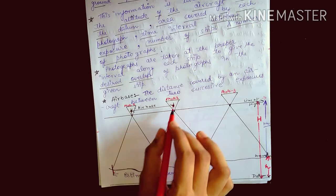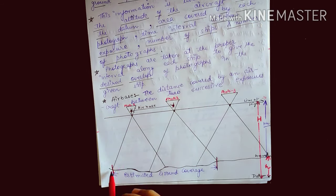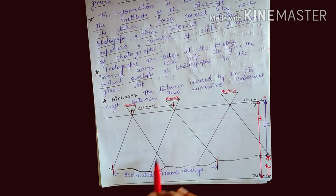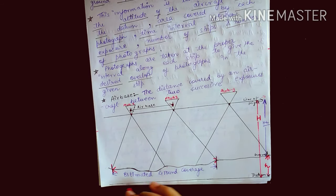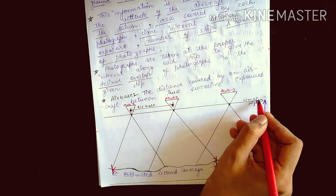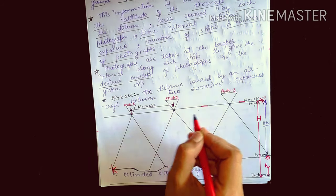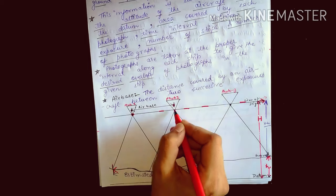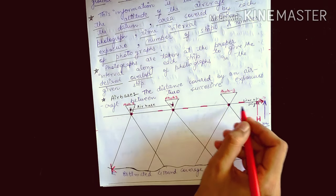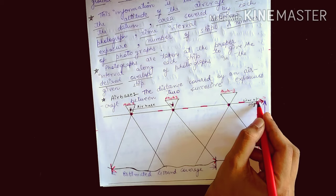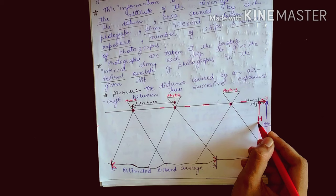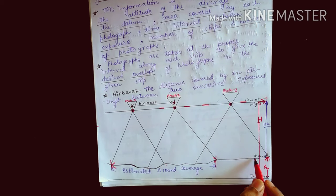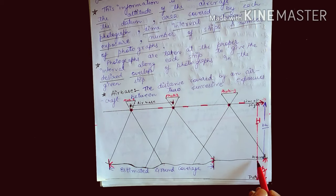For two exposure stations, the estimated ground coverage is noted. The line of flight is the path the aircraft follows. From the exposure station down to the datum, this distance is called flying height (capital H). From the datum to the ground is denoted by small h, and from ground to the exposure station it will be H minus h.